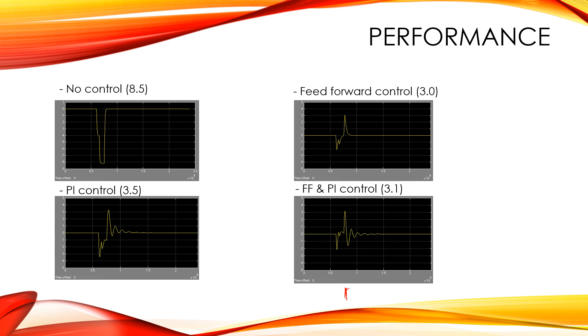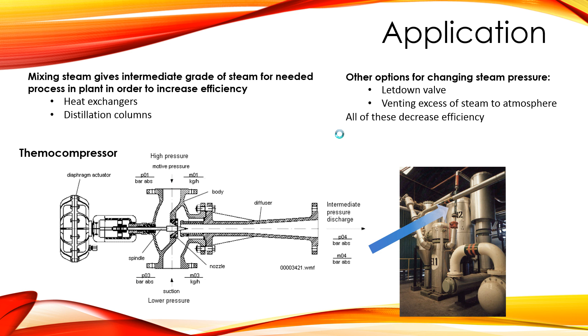So the biggest application for this mixing system is mixing steam for industrial applications. If we mix high pressure and low pressure steam, we get an intermediate grade that can be used for heating many different industrial processes. One device that's used to do that is something called a thermal compressor, that by just changing the valve position like in our system, we can accurately mix the high pressure and low pressure steam to get the steam that we need.